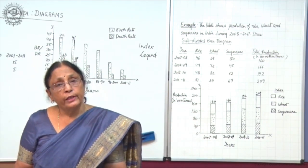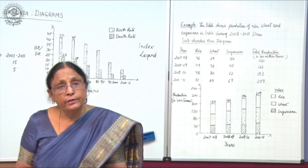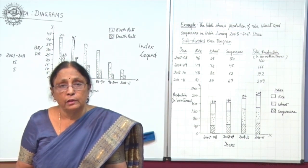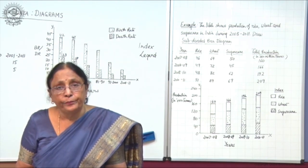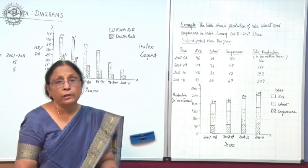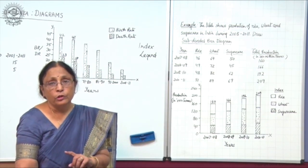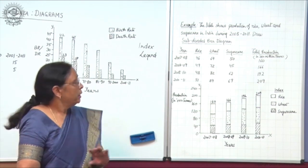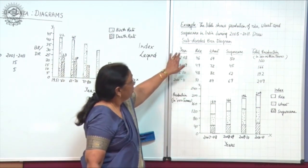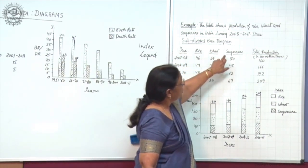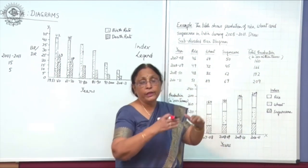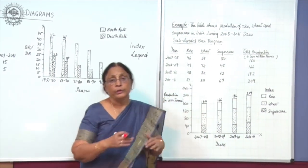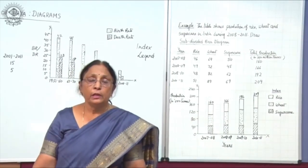The earlier example I gave for primary, secondary and tertiary sector — there was no total given, only three sectors and their percentage contribution were given. That data was more suitable for a triple bar chart. Here we have rice, wheat, sugarcane and total production also, so we can show the total with the subdivided bar diagram.